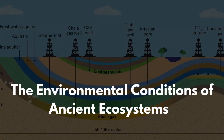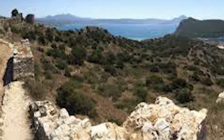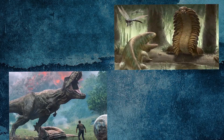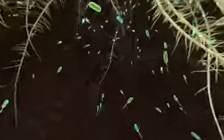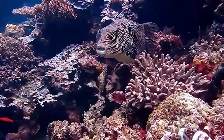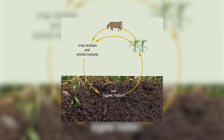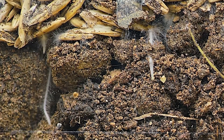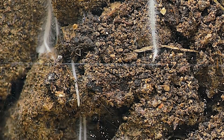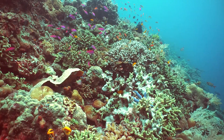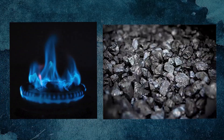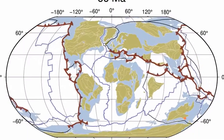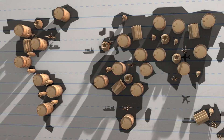The environmental conditions of ancient ecosystems play a vital role in hydrocarbon formation. During periods such as the Carboniferous and Jurassic, Earth's climate and sea levels created ideal conditions for the accumulation of organic material. Warm, shallow seas and nutrient-rich waters supported abundant life, leading to massive deposits of organic matter. The type of organic matter deposited also influences hydrocarbon characteristics: marine environments rich in plankton and algae produce oil, while terrestrial environments with plant material produce gas and coal.